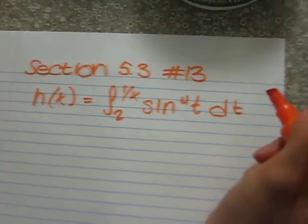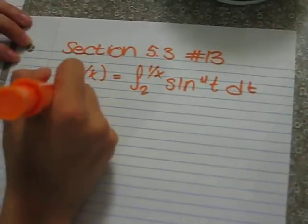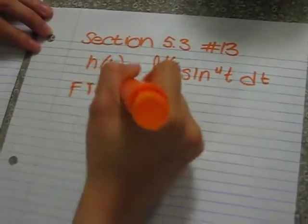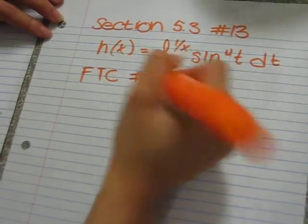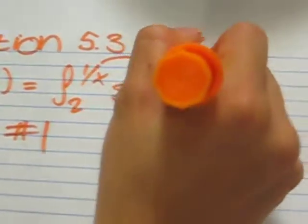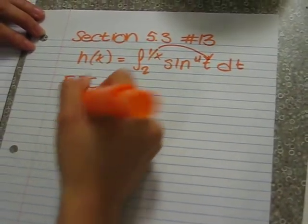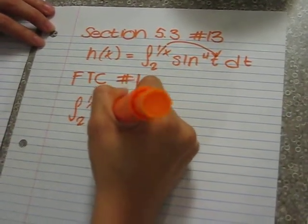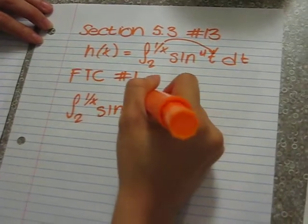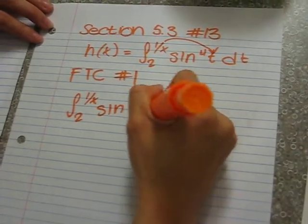So based on the fundamental theorem of calculus, the first one, what happens is you take this and put it where the variable t is. So what you're going to get is sine to the power of 4 times 1/x.